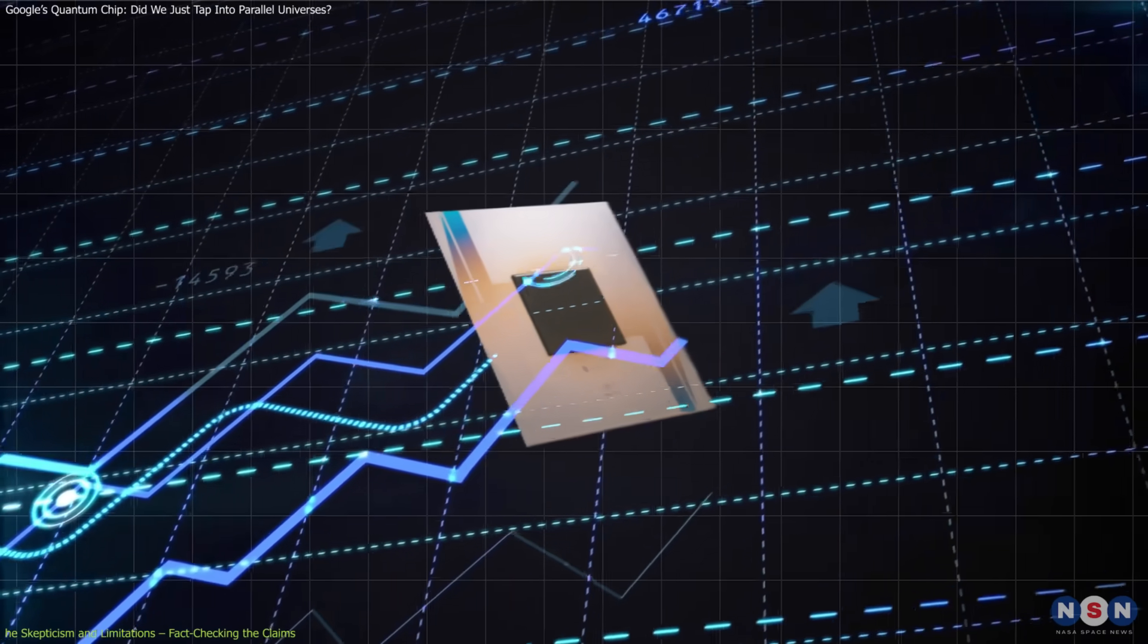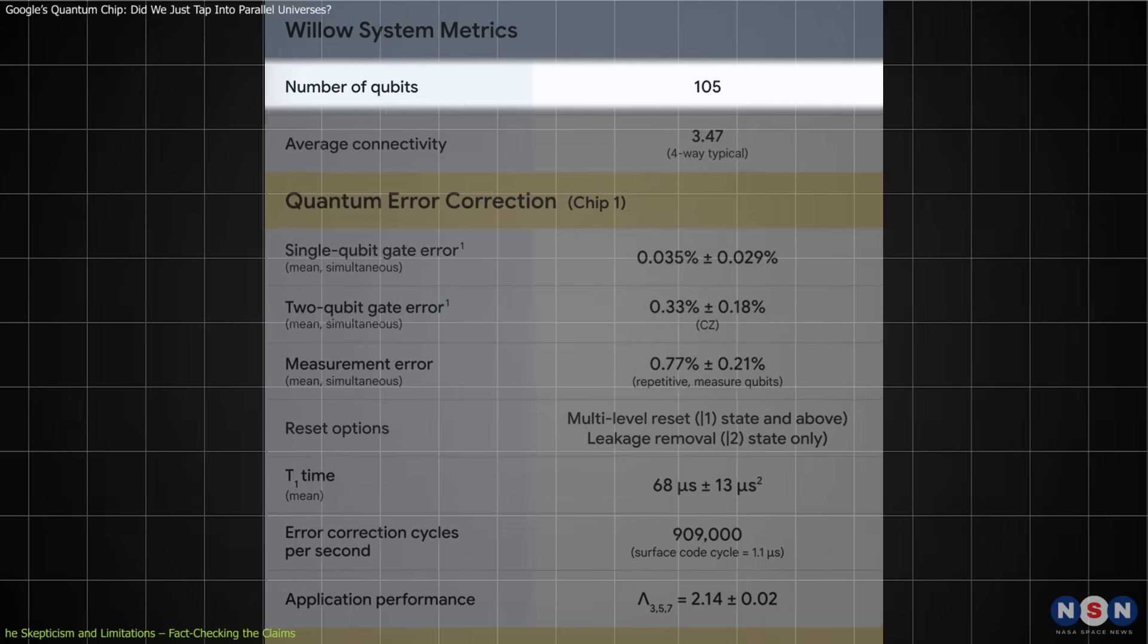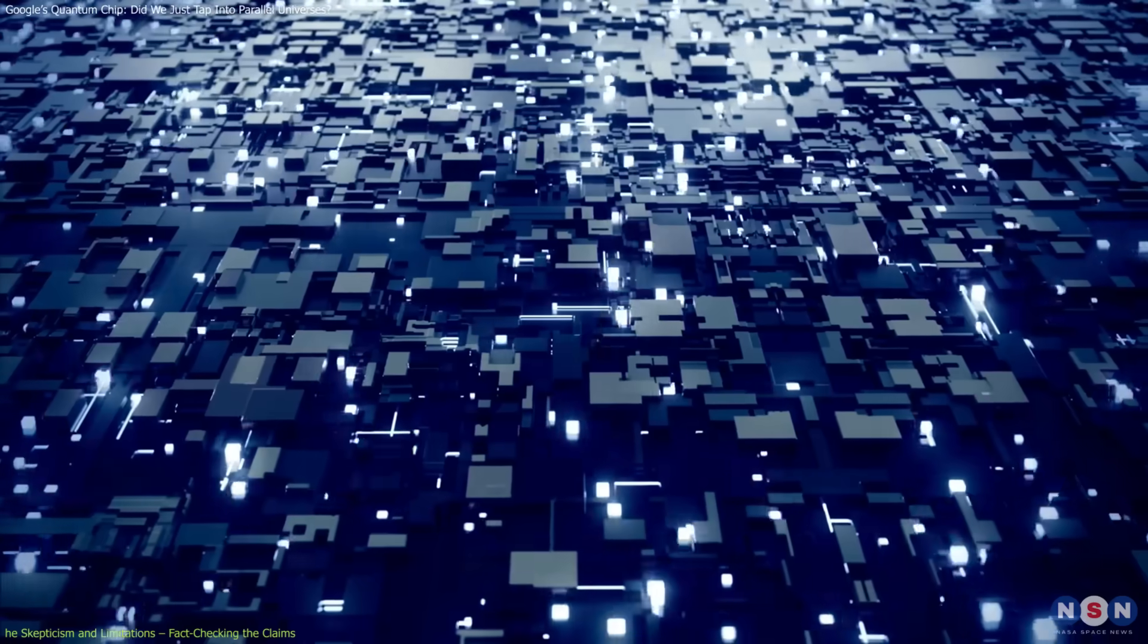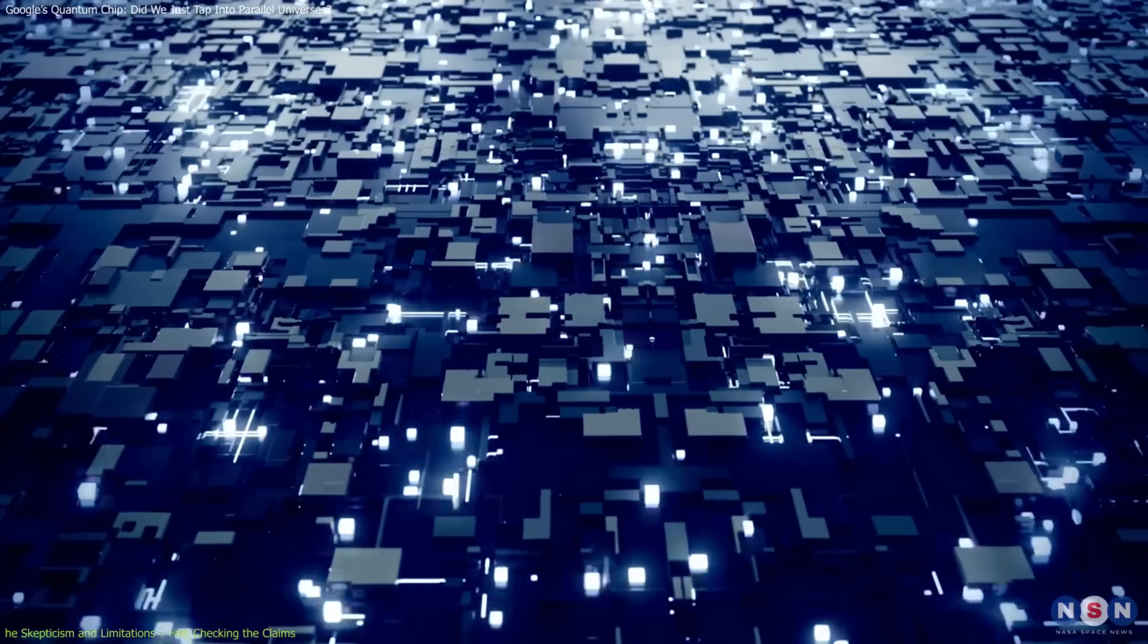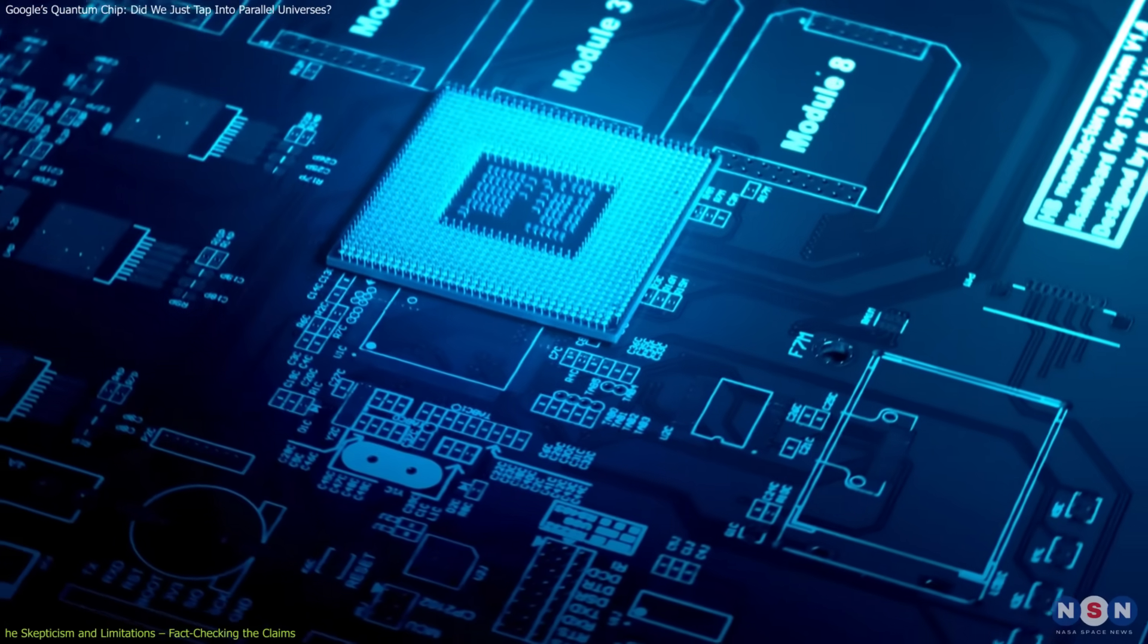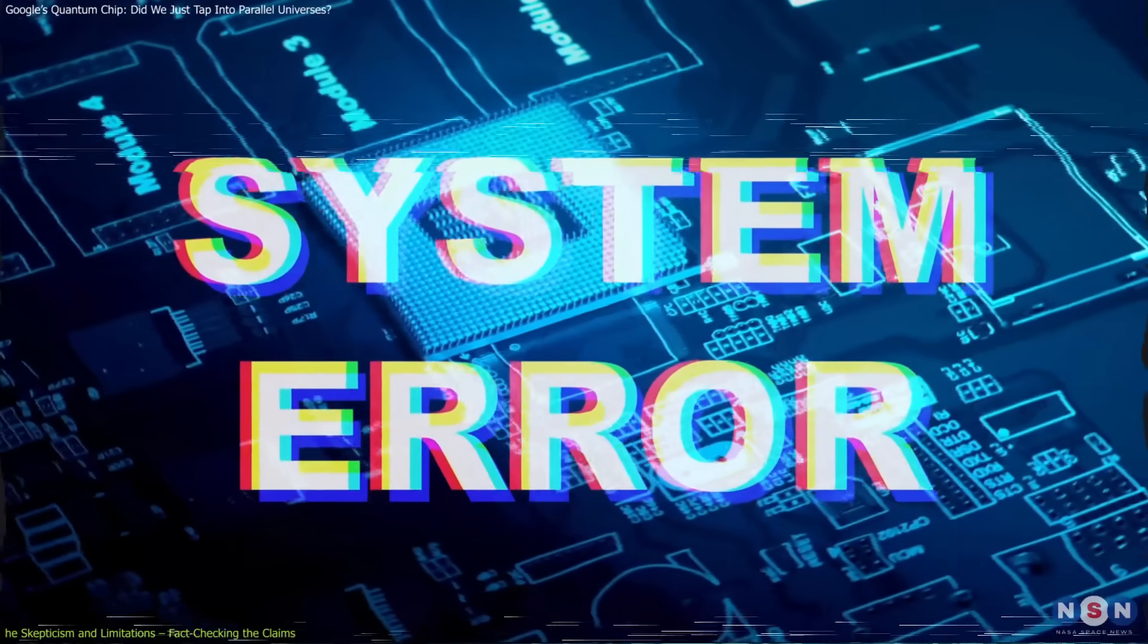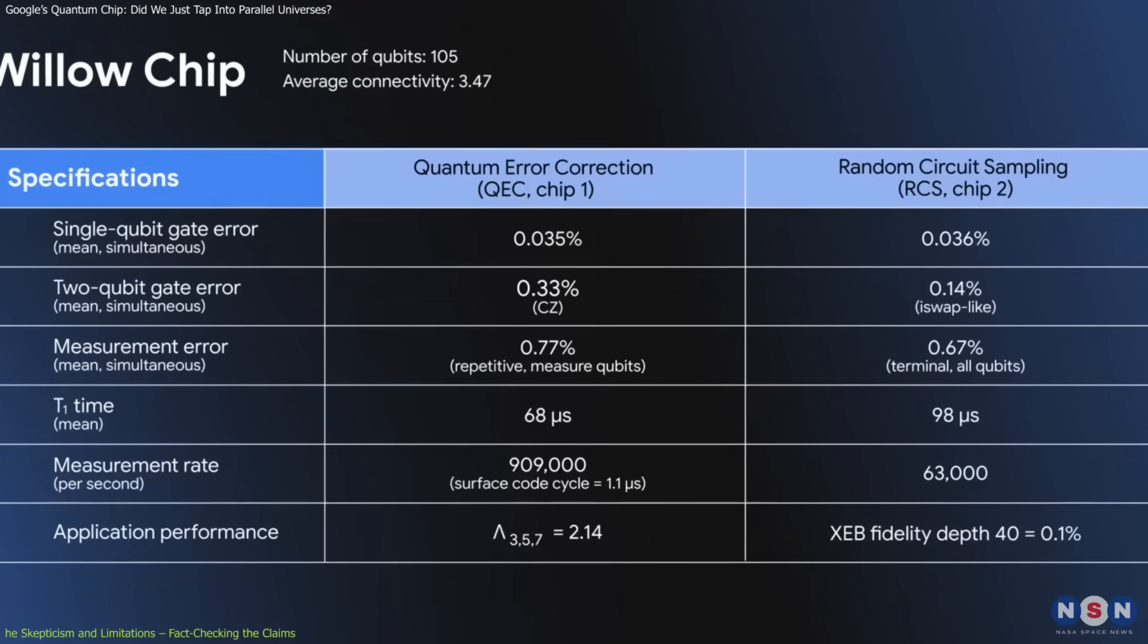Then there's the elephant in the room: scalability. Willow has 105 qubits, which is a big deal. But practical quantum computing will require millions of qubits. And not just any qubits, but ones that can operate reliably without errors. Quantum systems are notoriously delicate, with even tiny disturbances causing computational errors. Google's advancements in error correction are promising, but we're still far from solving this challenge completely.